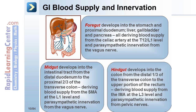Hindgut develops into the colon from the distal one-third of the transverse colon to the upper portion of the rectum, deriving blood supply from the IMA at the L3 level and parasympathetic innervation from pelvic nerves.